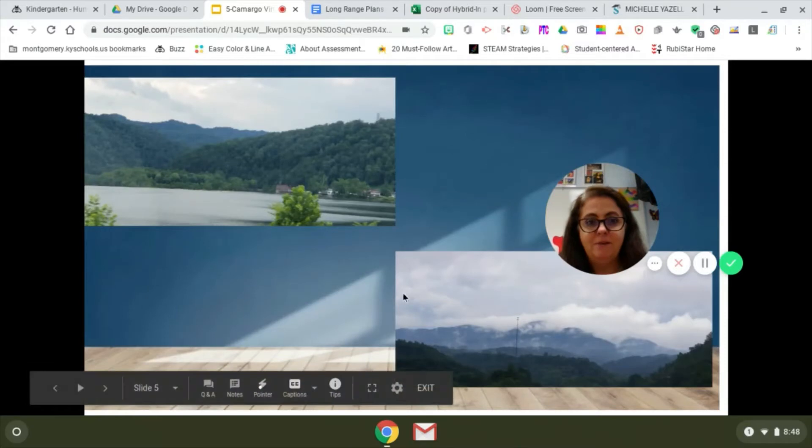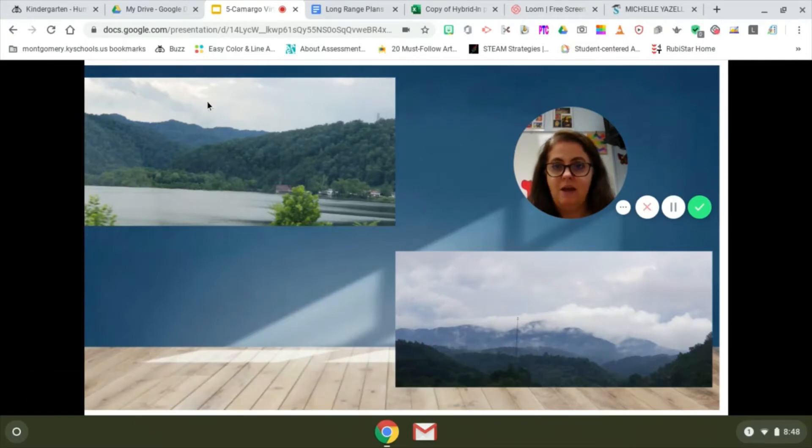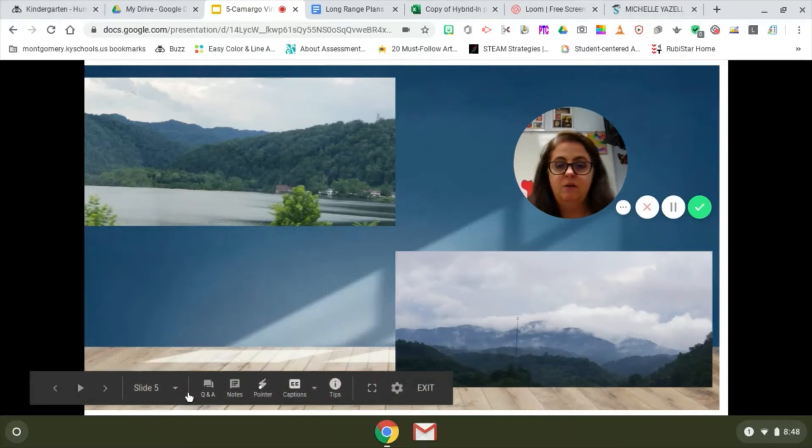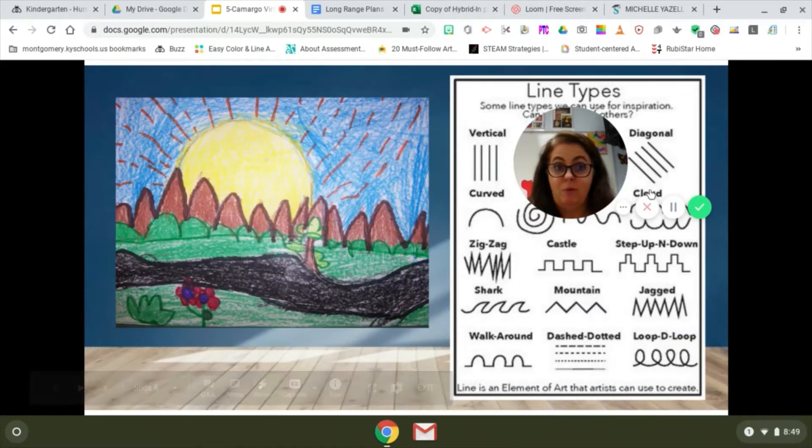Here are some pictures that Ms. Yazel took when she was in West Virginia of the landscape. You can see there's a line back here where the mountains are reaching the sky and it's separate from the ground. There's not a big blank space in between. We've got sky, we've got ground, we've got water. Here is an example of a kindergartner who drew this landscape that we're going to draw.